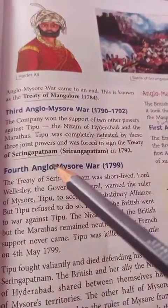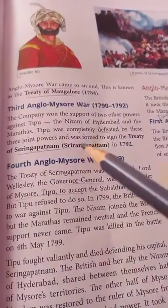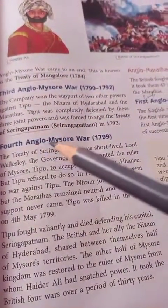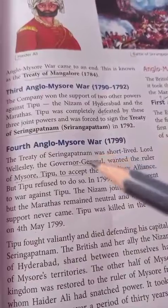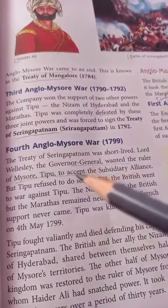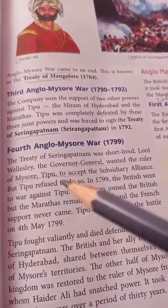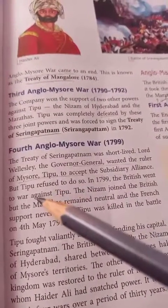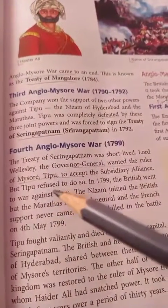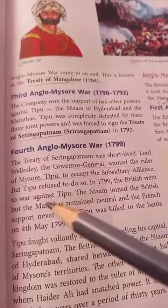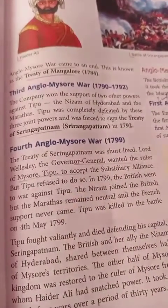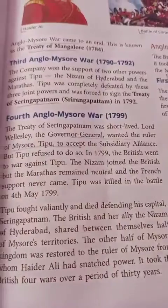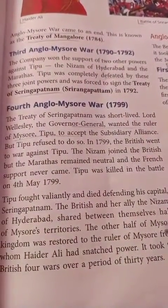Tipu signed the Treaty of Seringapatam. Then there was the fourth Anglo-Mysore war. There was a new Governor-General, Wellesley, and he wanted Tipu Sultan to accept subsidiary alliance. But in 1799, the British went to war against Tipu. The Nizam joined the British, but the Marathas remained neutral, and French support never came.